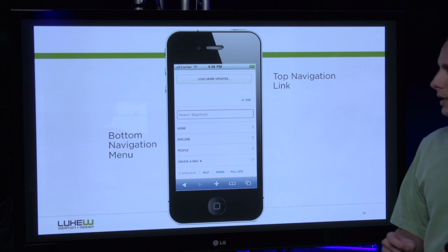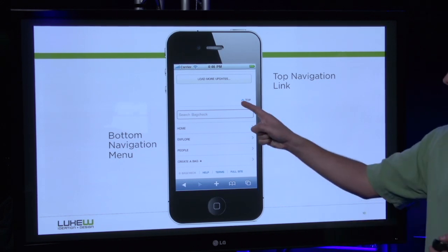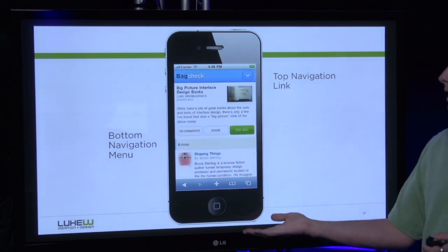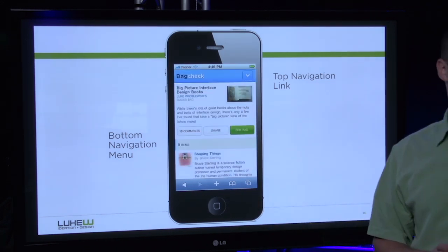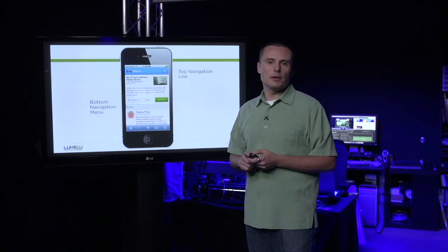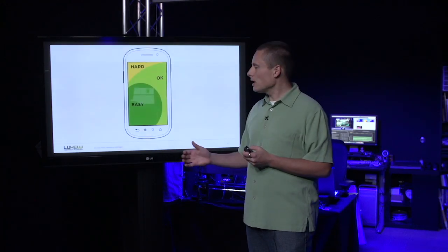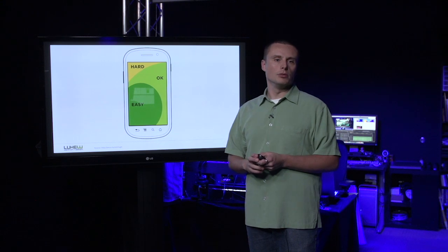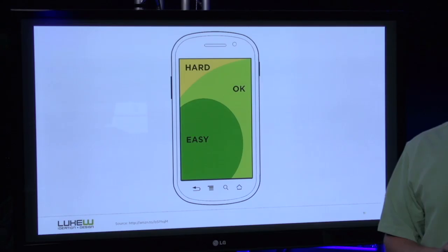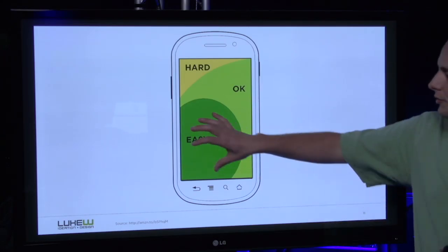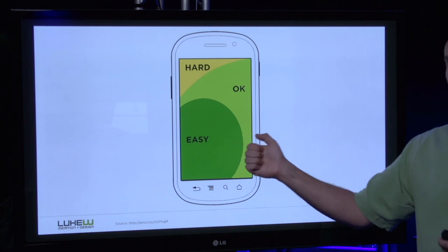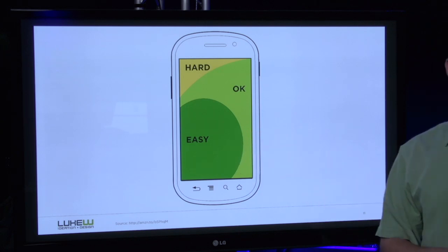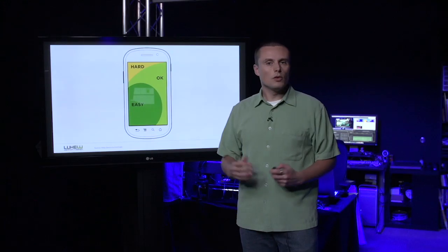To keep people in context, we can provide a back-to-top link that, if we tap, takes them right back to where they left off. The other interesting thing about this bottom menu is that it actually aligns with how people hold and use mobile devices. That is, the comfortable-to-hit area is in the bottom half of the screen right where that menu is positioned.